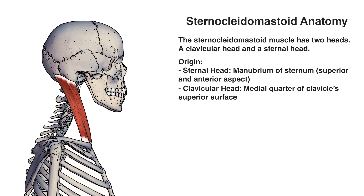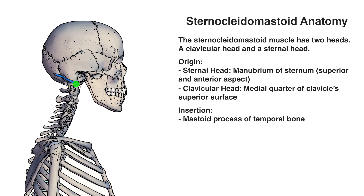Let's swap back over to a lateral view so we can better see the insertion point. You can see the insertion point highlighted here in blue. We'll start by looking at this section of the insertion — this would be the mastoid process of the temporal bone. It's really easy to feel this part of the insertion on yourself.